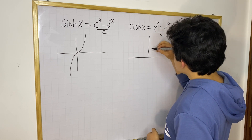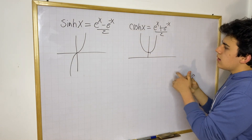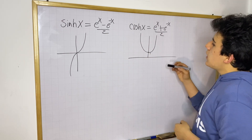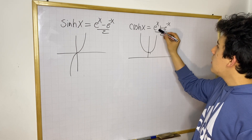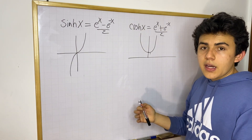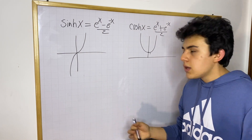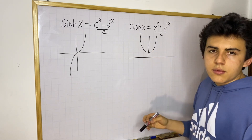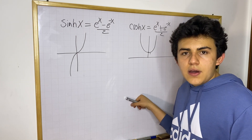So cosh looks like a parabola with a minimum at one. Why does cosh not go below one? If you evaluate cosh at x = 0, you get (1 + 1) / 2 = 1. So cosh will never go below one — it only has positive outputs.